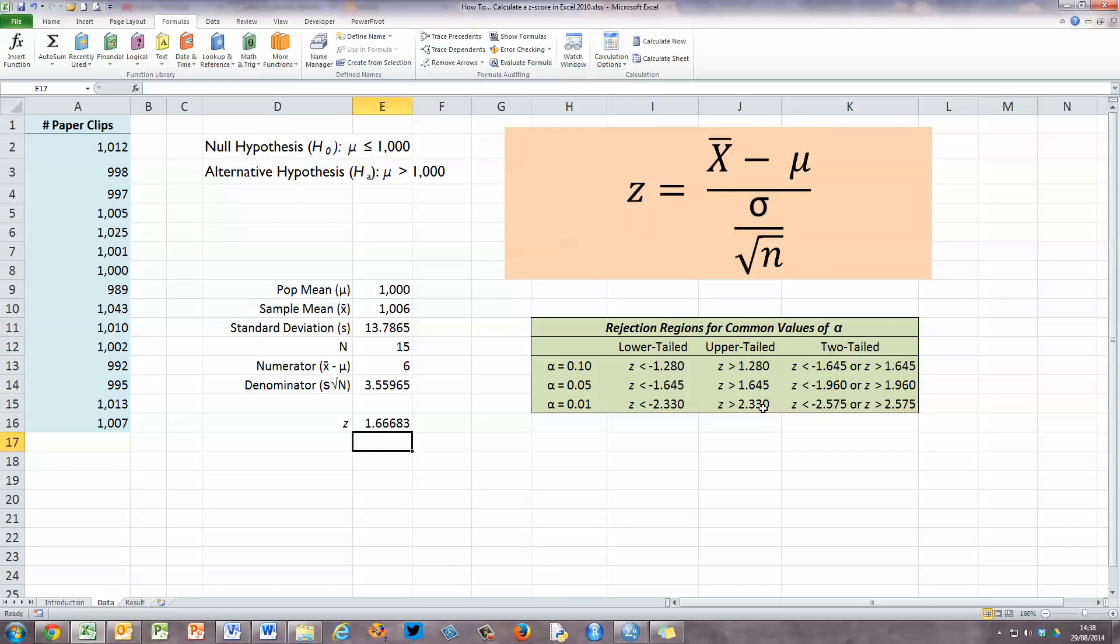And if our value is greater than that, that falls into the rejection region, and we can reject the null hypothesis in favour of the alternate hypothesis. And the alternate hypothesis is that the population mean is greater than 1,000. So, therefore, our z-score here is telling us that our sample here is good, and based on this sample, our population has an average of 1,000 paperclips per box or more.